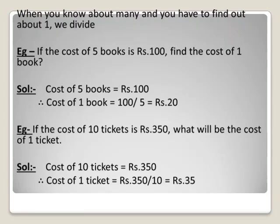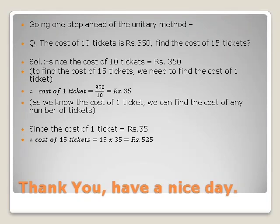Going one step ahead of the unitary method — in this example we will make use of both mathematical operations. The question says: the cost of 10 tickets is rupees 350, find the cost of 15 tickets. To find the cost of 15 tickets, we need to find the cost of one ticket first. Since the cost of 10 tickets is rupees 350, the cost of one ticket is 350 divided by 10, that is rupees 35. Now, since the cost of one ticket is rupees 35, the cost of 15 tickets is 15 multiplied by 35, that is rupees 525.